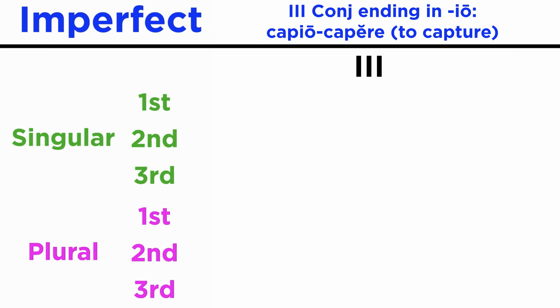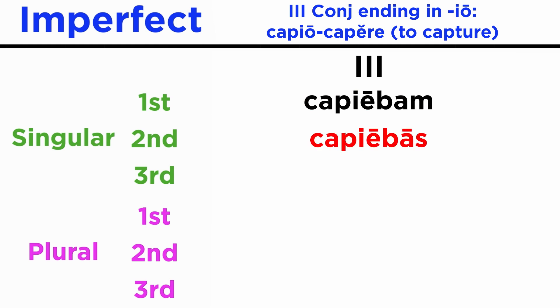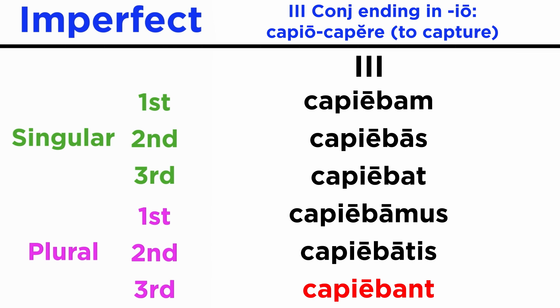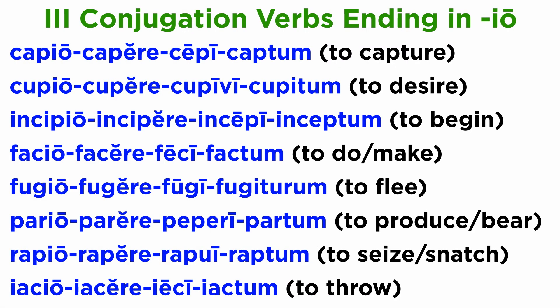The third conjugation io verbs, like capio, capere, will look very much like the fourth conjugation verbs, so let's look at that one too. For a comprehensive list of verbs in io, you may want to check the earlier tutorial on the present indicative of the fourth conjugation and verbs in io.